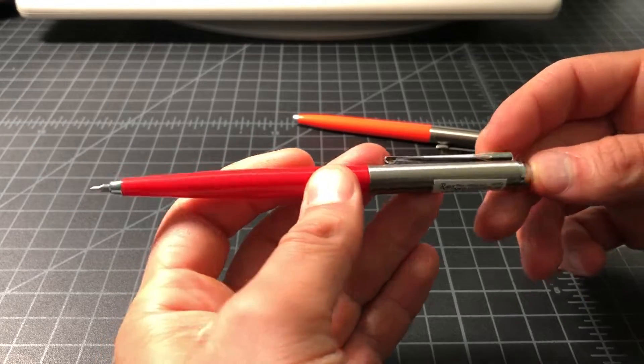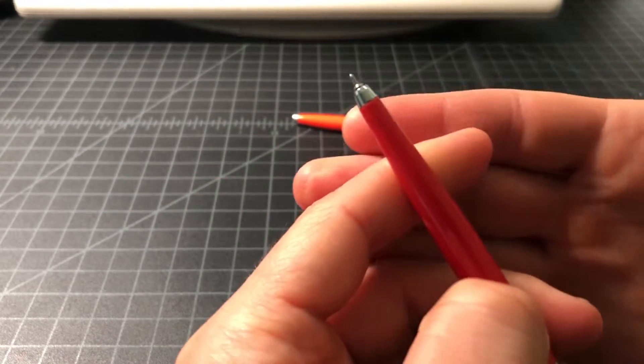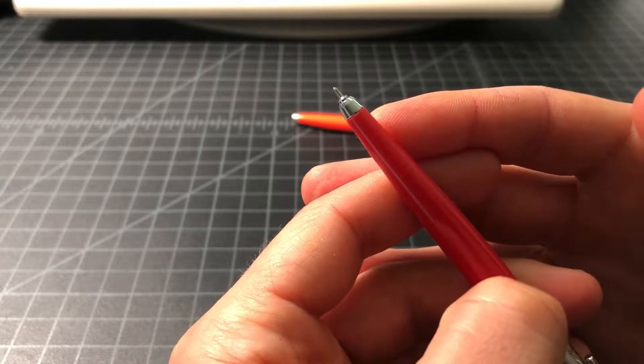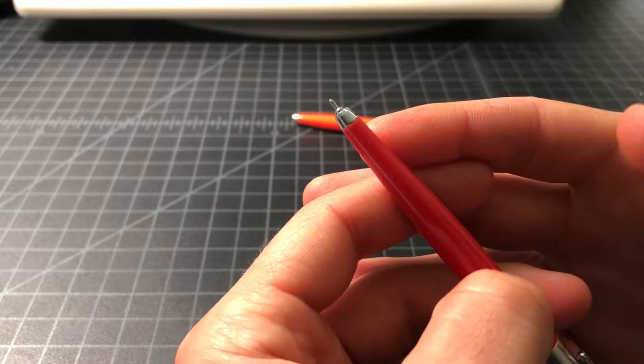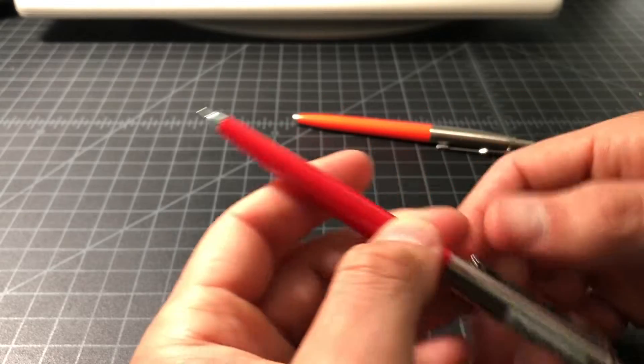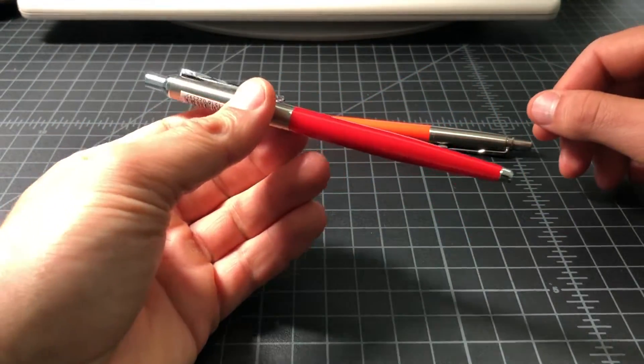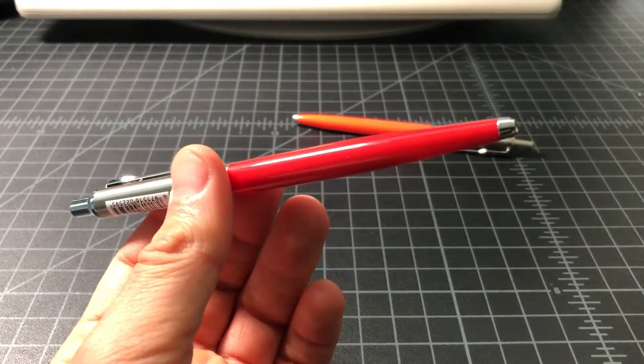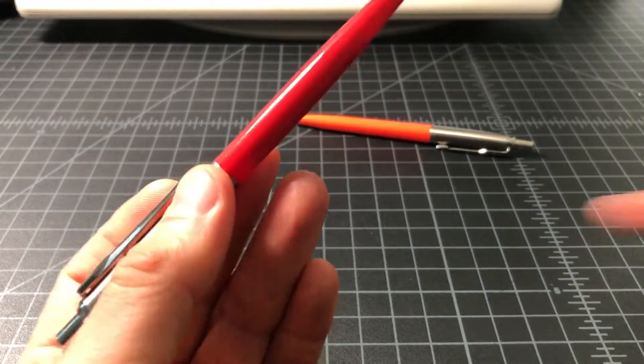The most interesting part about the Ohto Raise is that it uses a needle tip - a 0.5 millimeter needle tip gel pen. I don't know if it's an ideal everyday carry pen because gel isn't always ideal for many people, plus needle tip isn't very versatile.